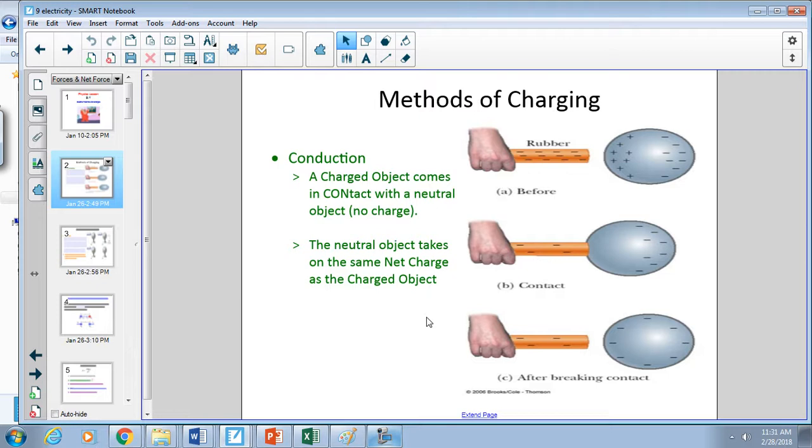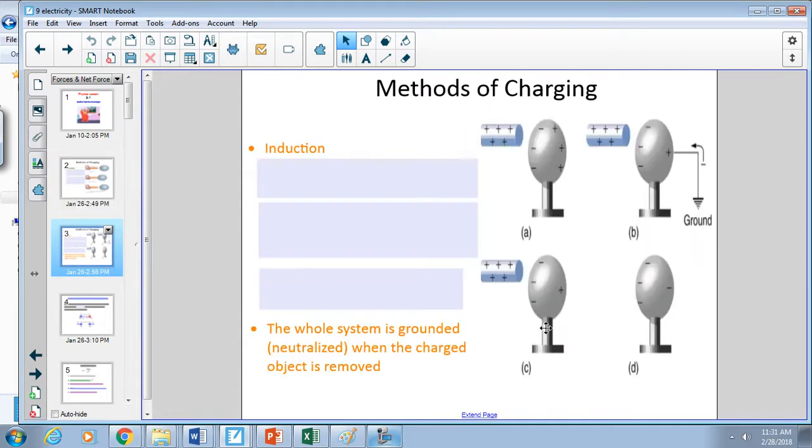The second type that we can look at is something known as induction. This one's a little bit trickier but still pretty straightforward. So we still have a charged object, we still have a neutral object. The difference here is that neutral object has some kind of ground - a person, a metal object, something that's grounding it.